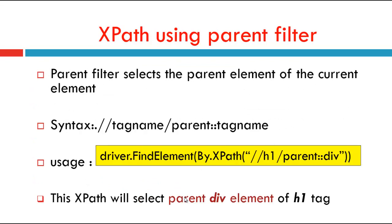The first XPath Axis is XPath using parent filter. Parent filter selects the parent element of the current element. The parent axis contains the parent of the context node if there is one. The syntax is double forward slash tag name forward slash parent colon colon tag name. We use it like driver.findElement(By.XPath), passing the value in double quotes. Here I used H1 slash parent colon colon div — this XPath will select the parent div element of H1 tag.